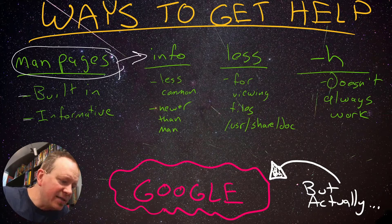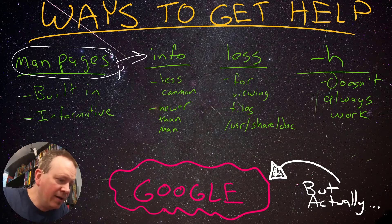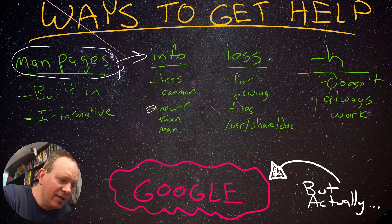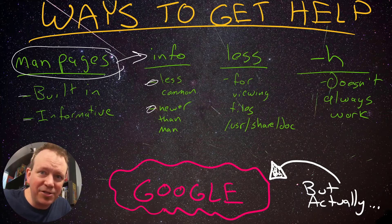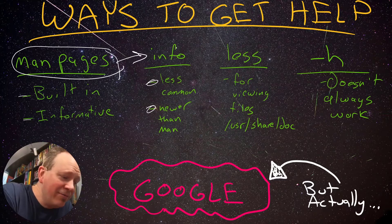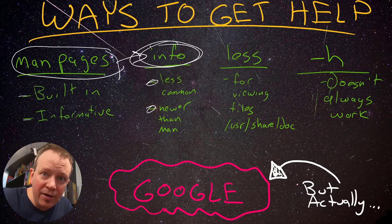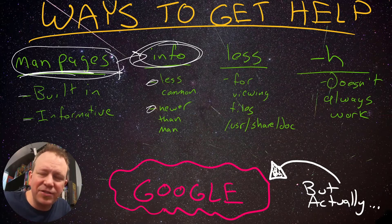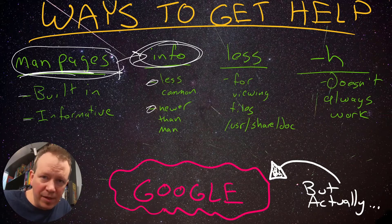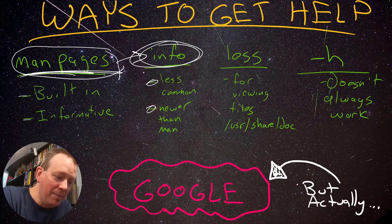Man pages were actually replaced with the info command, which formats things a little more nicely and is newer. However, it's less common — it's kind of like the Betamax of the video cassette world. Info may actually be better than man when it comes to looking up information on how to use an application, but man pages are what everybody uses. So info and man do almost the exact same thing; very few people actually use info.